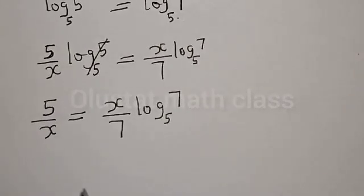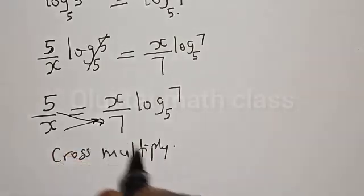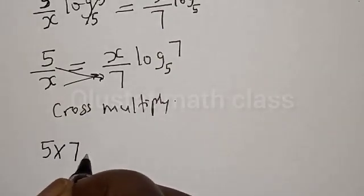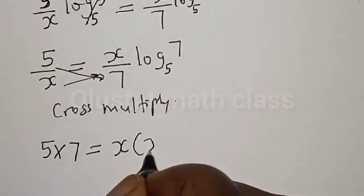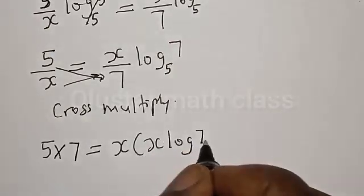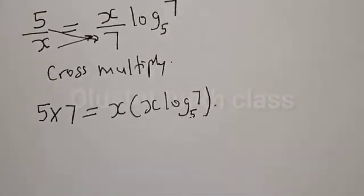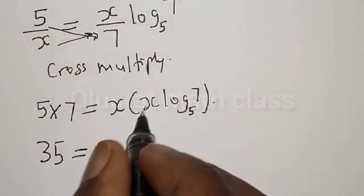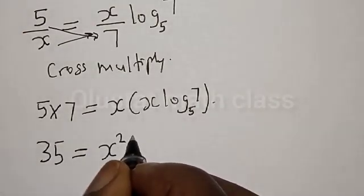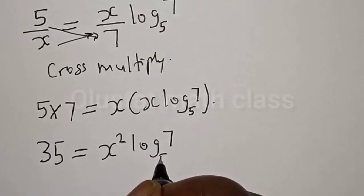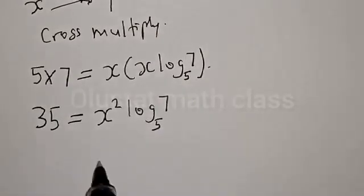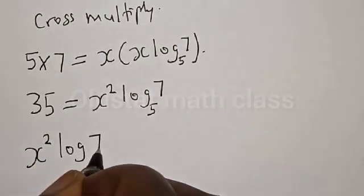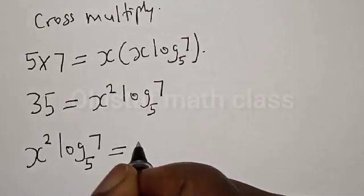Now let's cross multiply. We get 35 is equal to x times x, that is x squared, times log 7 base 5. This can be rearranged as x squared times log 7 base 5 is equal to 35.